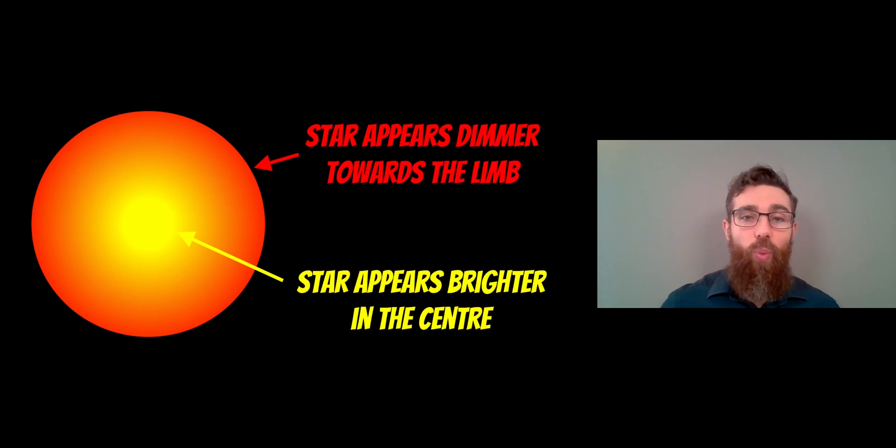So that is what can alter the transit shape of an exoplanet that passes in front of the star, and it's mostly down to the inclination and where it then passes in front of the star. So thank you for watching and if you enjoyed then you can check out some of the other videos.